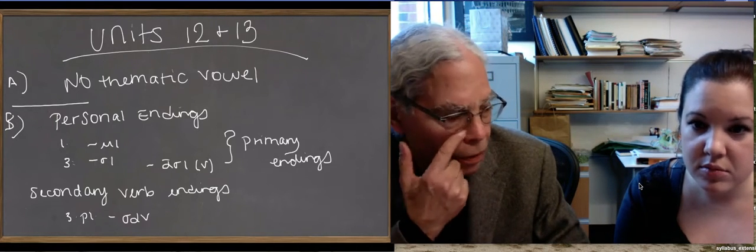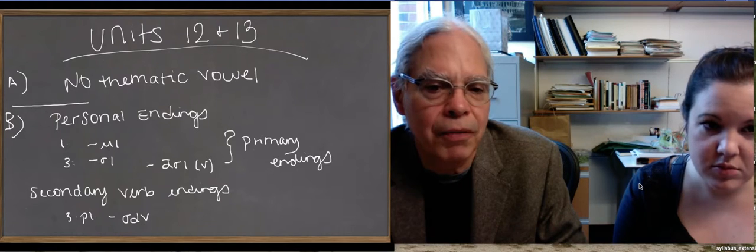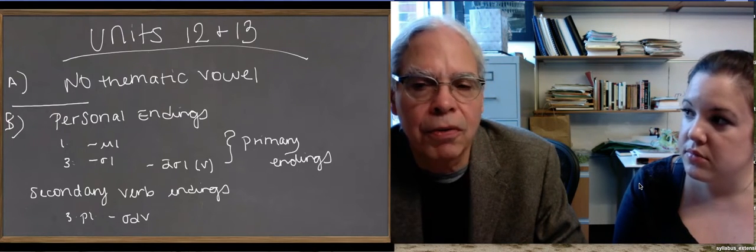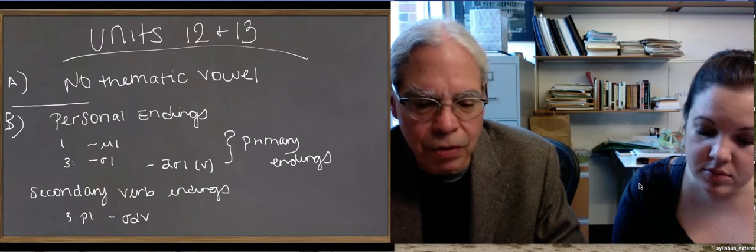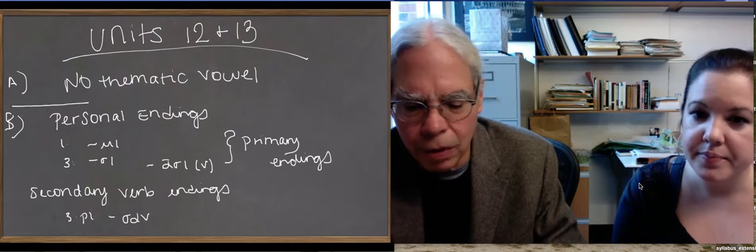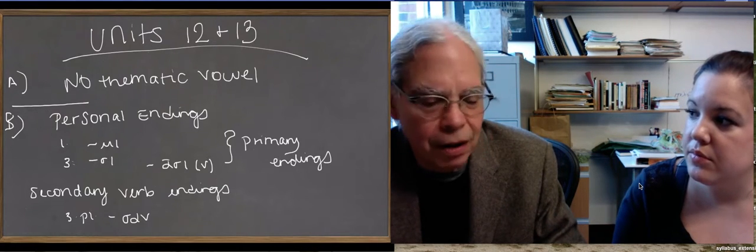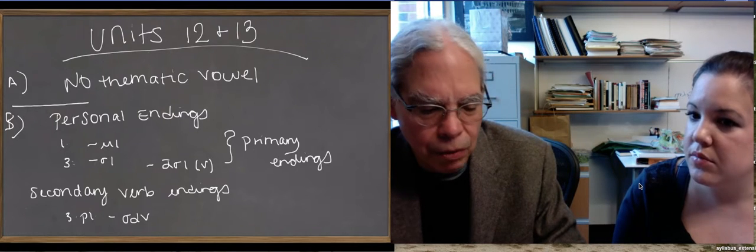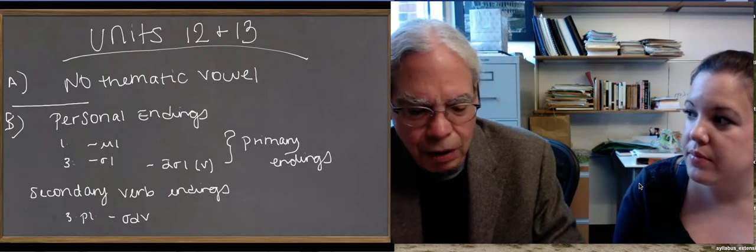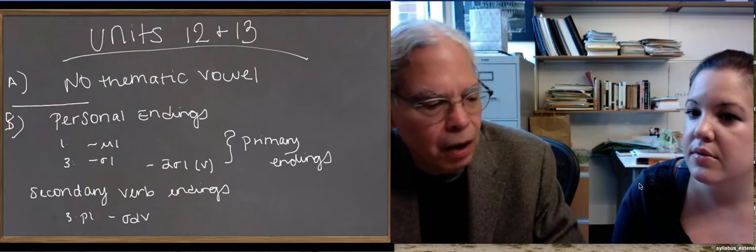We're going to start with a list of the things that are different between these verbs and the ones that you know. The first difference is that they're called as a class the athematic verbs, and that's because they have no thematic vowel separating the stem from the ending, and that's literally and historically true. You do have the fact that when you come to the subjunctive, remember the subjunctive, in the subjunctive what you have is an alternation between eta and omega, and that's a doubled thematic vowel. The older subjunctive was to introduce a thematic vowel.